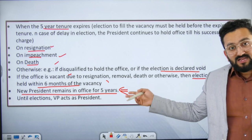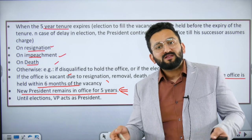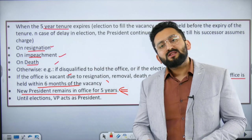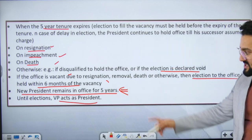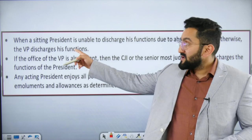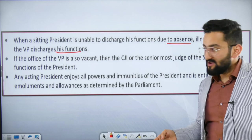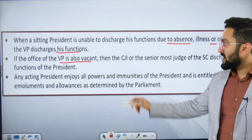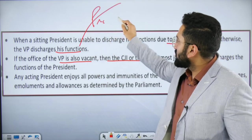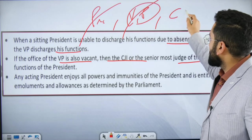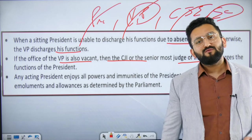If there is a vacancy, a fresh election must be conducted within six months, and the new President remains in office for five full years — not the remainder of the previous term. Until the election happens, the VP acts as acting president. If a sitting President is unable to discharge functions due to absence, illness, or otherwise, the VP acts as acting president. If the VP post is also vacant, then the CJI acts as acting president; if CJI is also unavailable, then the senior-most Supreme Court judge acts as acting president.